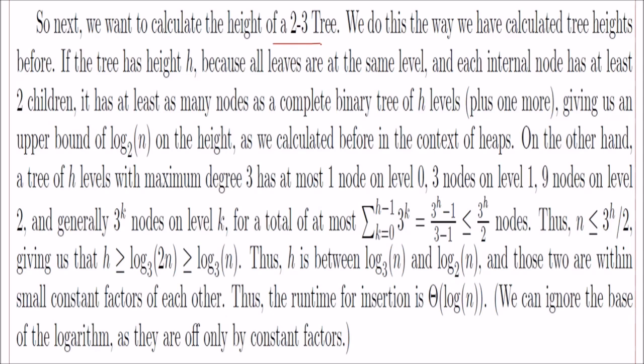Now we have to calculate the height of a 2-3 tree. We do this the way we have calculated tree heights before. If the tree has height h, because all the leaves are at the same level in 2-3 trees and each internal node has at least two children, it has at least as many nodes as a complete binary tree of h levels plus one more. On the other hand, a tree of h levels with maximum degree 3 has at most one node on level zero, three nodes on level one, nine nodes on level two. Generally, 3 to the power k nodes on level k. If you want to total it, it will be the sum of 3 to the power k from zero to h minus one.